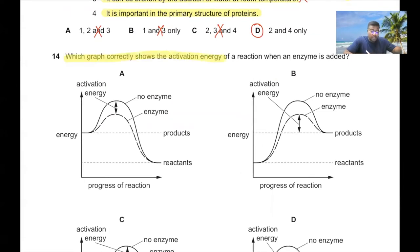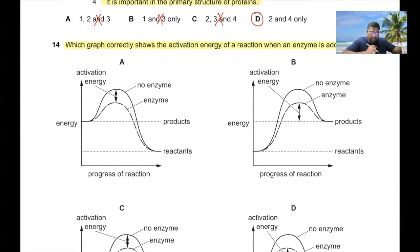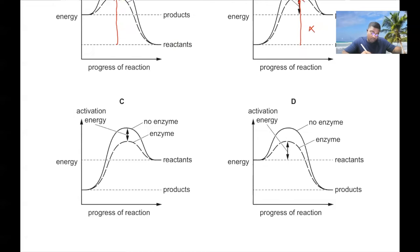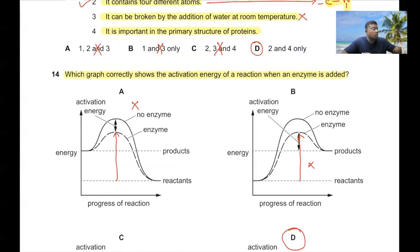Question 14: Which graph correctly shows the activation energy of a reaction when an enzyme is added? Activation energy decreases when an enzyme is added. The correct graph shows the activation energy for an enzyme-catalyzed reaction going from reactants to products with a lower energy barrier. Option D is correct.